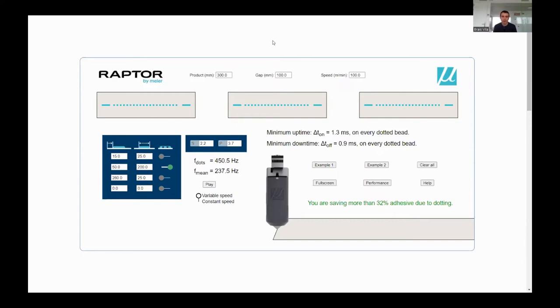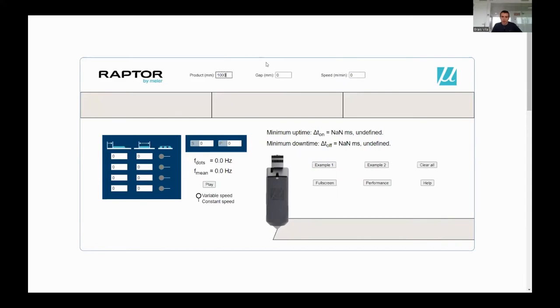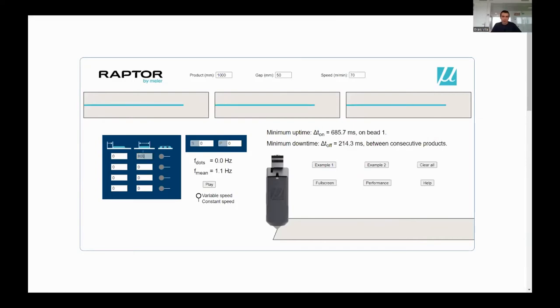That's what these applications are for. This first application I call Application Planner. It lets me plan an application with some requirements from the customer. For instance, I will click here and clear all and introduce some parameters here. One customer could say that his product is maybe one meter long, there is a gap between products of maybe 15 millimeters, and the speed of his production line is maybe 17 meters per minute. He wants to apply an 800 millimeter long adhesive bead on the product, and he might dot it just to save some adhesive.